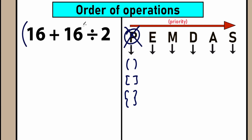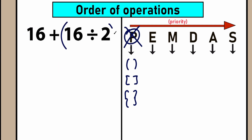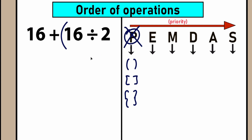For example, if we had parentheses around 16 plus 16, we'd need to add them first: 16 plus 16 equals 32. Or if we had parentheses around 16 divided by 2, we'd evaluate that first: 16 divided by 2 equals 8. But we don't have parentheses in our question, so we move to the next step.